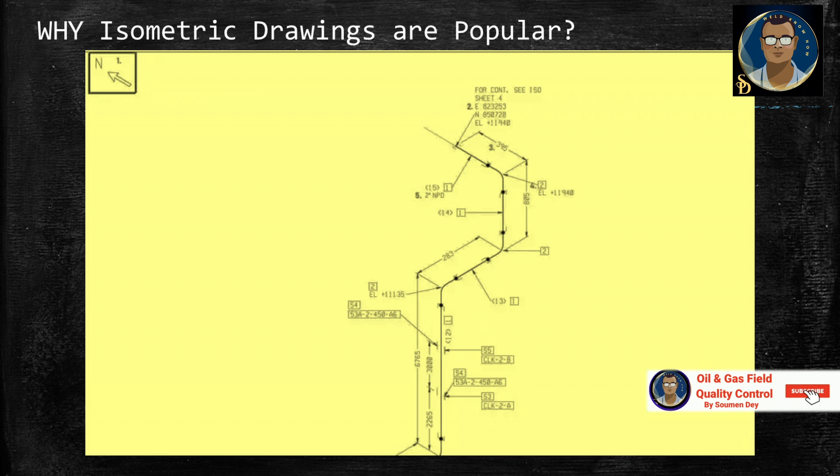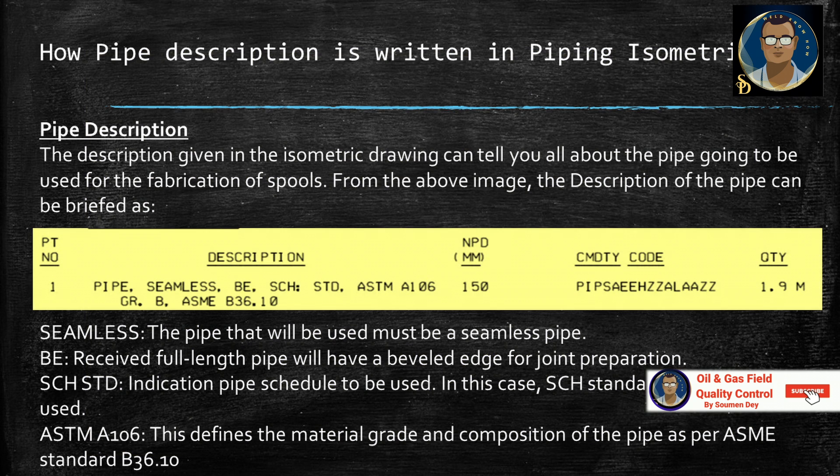You can see some examples of isometric drawing with a lot of information like pipe description, how it is being represented in piping isometric drawing. The description given in the isometric drawing can tell you all about the pipe going to be used for the fabrication of spool.